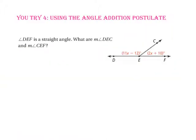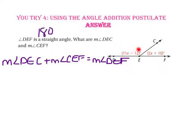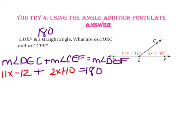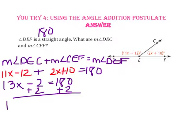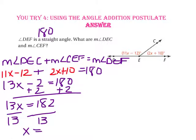Pause the video and do you try number 4. Let's check. If the measure of angle DEF is a straight angle, that means it's 180 degrees. What are the measures of angle DEC and angle CEF? Adding the two angles gives 180 degrees. Substituting 11X minus 12 for angle DEC and 2X plus 10 for angle CEF, and 180 for angle DEF: 11X plus 2X is 13X, and negative 12 plus 10 is negative 2, so 13X minus 2 equals 180. Adding 2 to both sides: 13X equals 182. Dividing by 13, X equals 14.